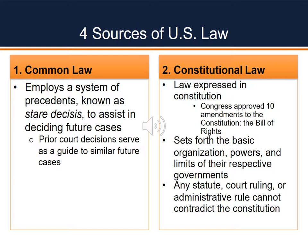Our second source of law that our court systems have to administer is constitutional law. This law is expressed in our Constitution and the ten amendments known as our Bill of Rights. The Supreme Court ultimately interprets the Constitution, and in doing so they define our rights and our government boundaries. Constitutional law sets forth the basic organization, powers, and limits of our government. It also indicates any statute, court ruling, or administrative rule cannot contradict the Constitution. So our first two sources of US law are common law — heavily based on stare decisis or legal precedents — and constitutional law, based on our ten amendments and the Bill of Rights.